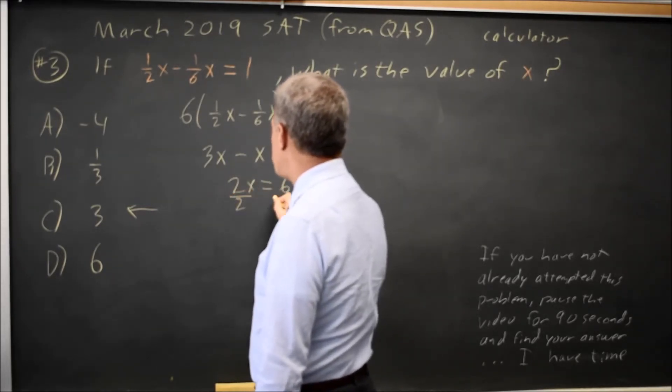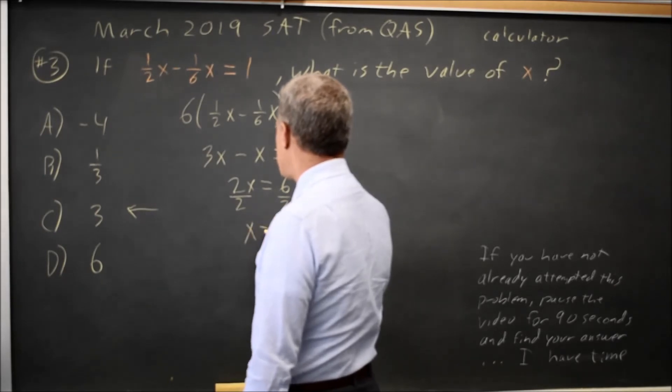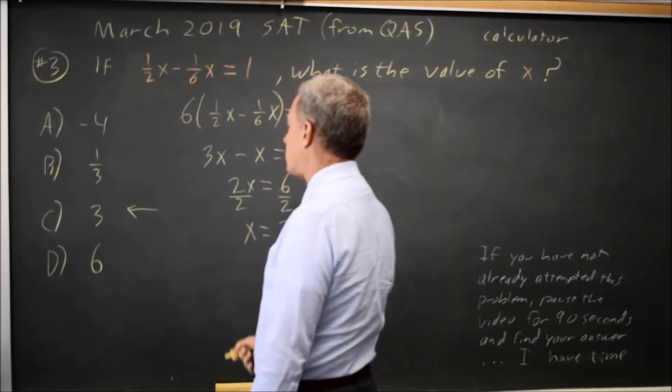To get x by itself, since it's multiplied by 2, I'll divide both sides by 2. So x equals 6 over 2, which is 3.